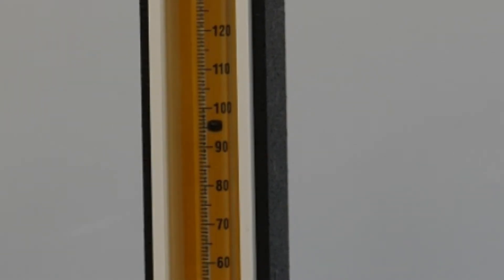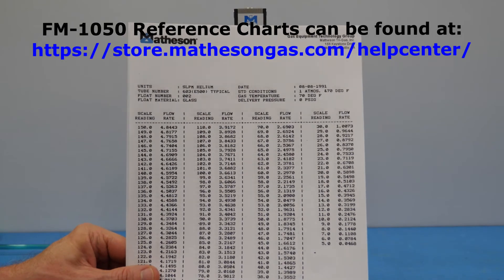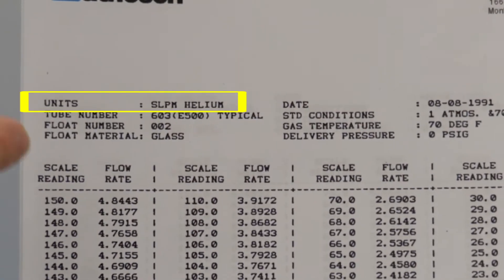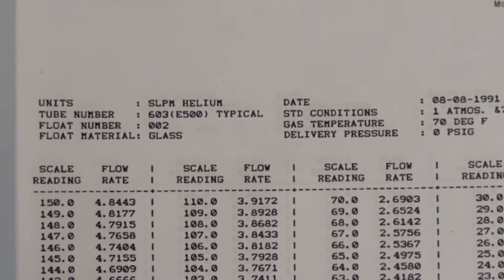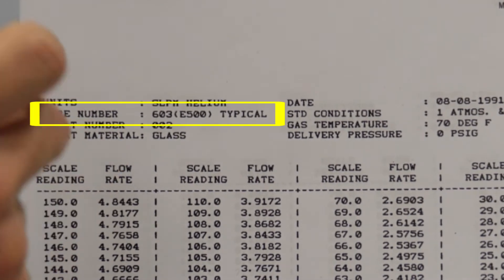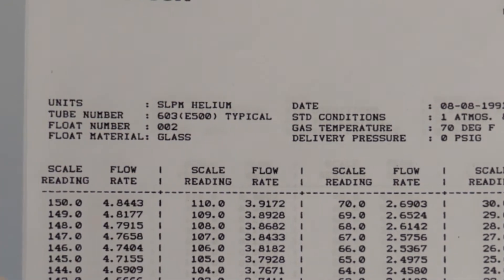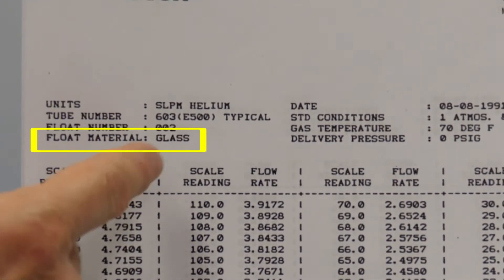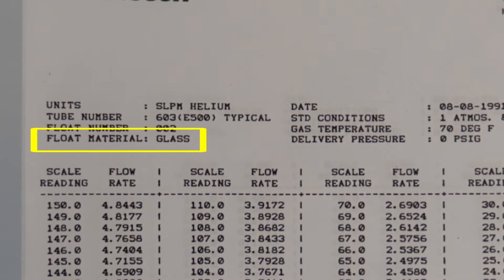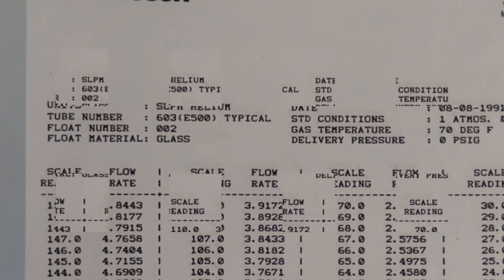Let's rotate it back. We'll take a look at our flow curve for the glass float. It's important to note that you have the proper flow curve. We want standard liters per minute helium for units. The tube number should match what's in the device: 603 E500. We want to read the glass float. Additionally, the delivery pressure is very important. In this case we want zero psi G.